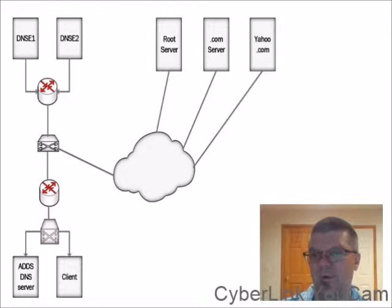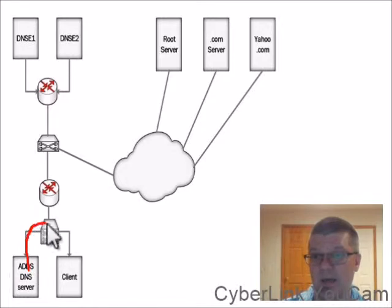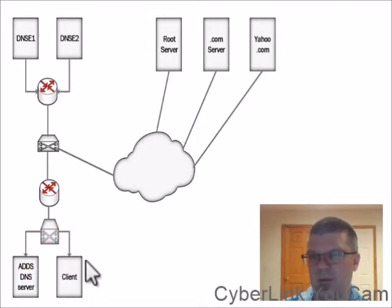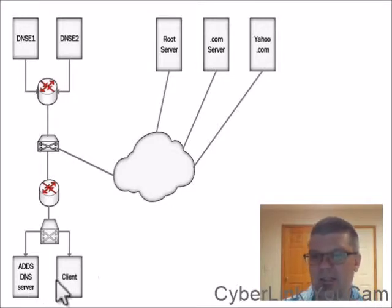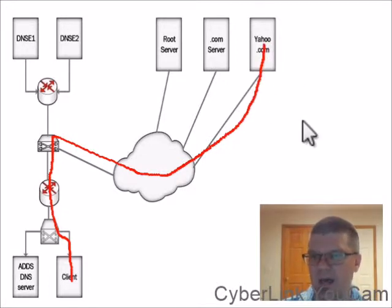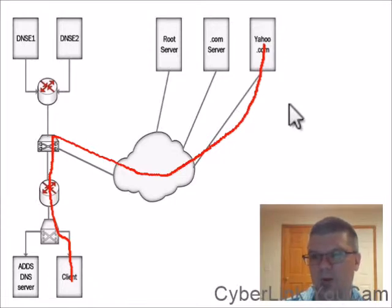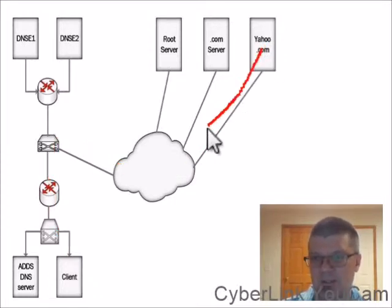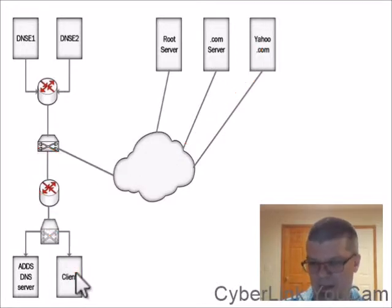It is at this point that the domain controller sends the IP address to the client's resolver, which in turn sends the IP address to the client's browser. The browser builds the GET packet and sends it to the IP address of www.yahoo.com. The packet travels to www.yahoo.com, which should have a web server. The web server pulls up the information and sends it back across the internet to the client's computer in the form of a web page.